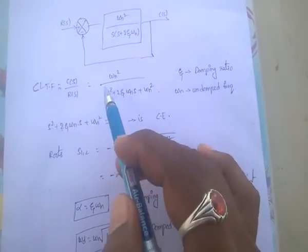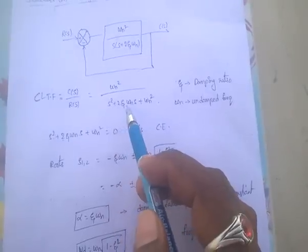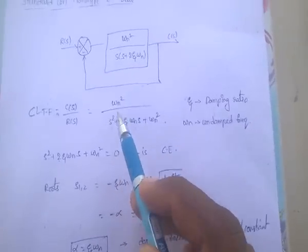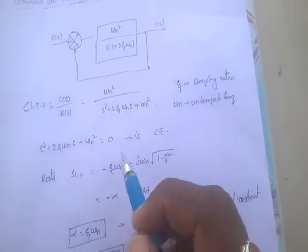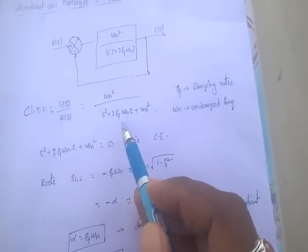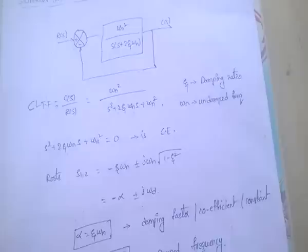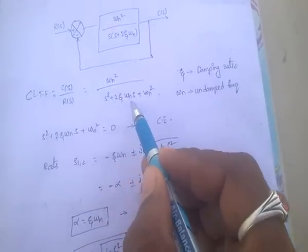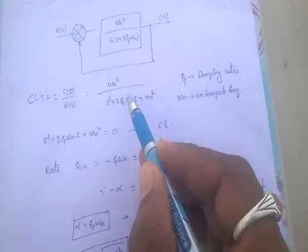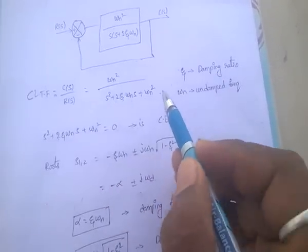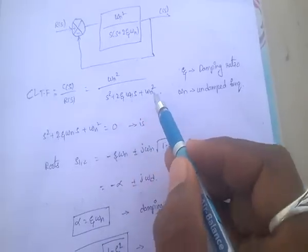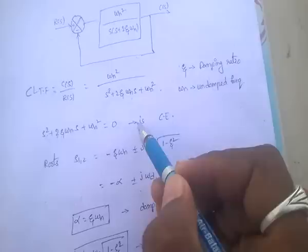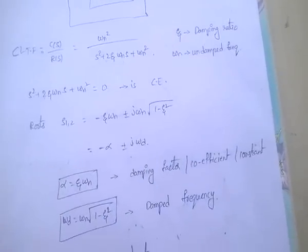The closed loop transfer function is ωn² / (s² + 2ζωns + ωn²). Here, ωn is the undamped frequency, and ζ (zeta) is the damping ratio. The expression s² + 2ζωns + ωn² is the characteristic equation — that is, s² + 2ζωns + ωn² = 0 is the characteristic equation.